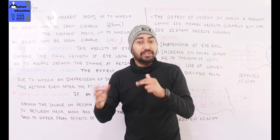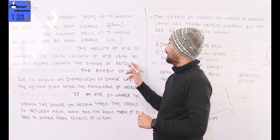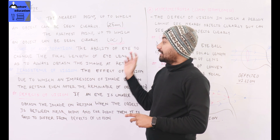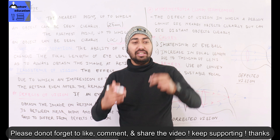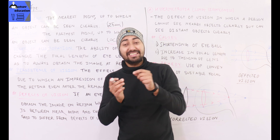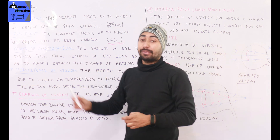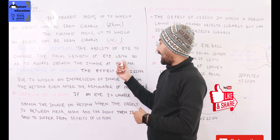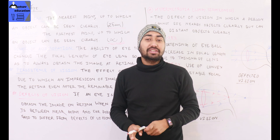Another important concept is the power of accommodation, or accommodation of vision. This is the ability of the eye to change the focal length of the lens so as to always obtain an image on the retina — from near point to far point. The range within near point and far point is called the accommodation of vision.